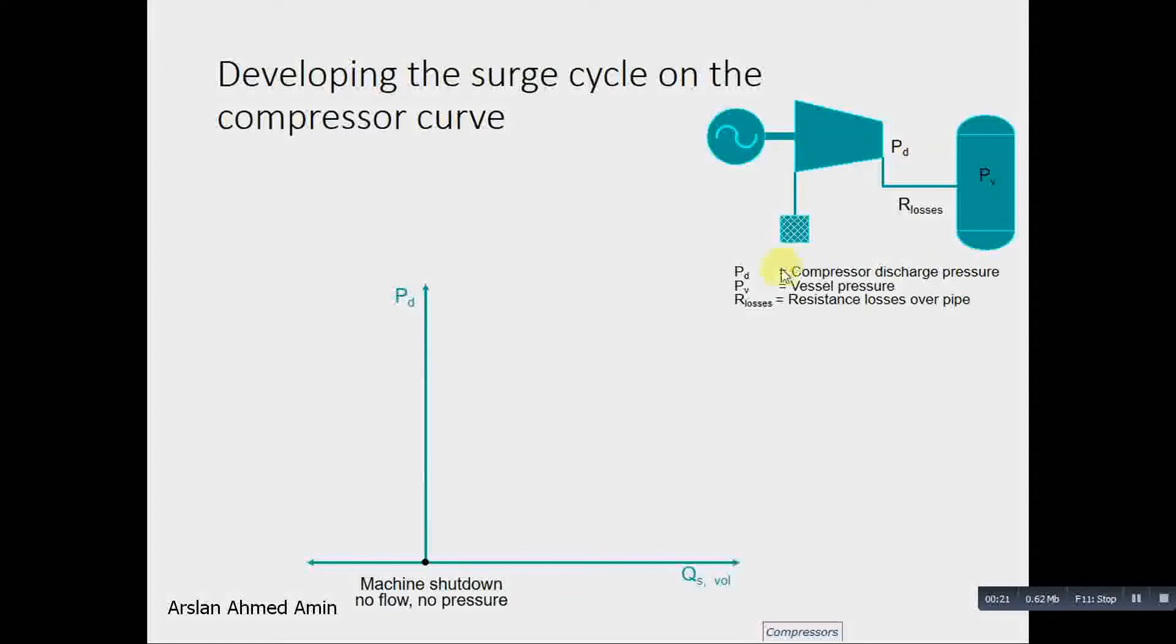Multiple compressor frames are installed here. This is the prime mover of the compressor. PD is the compressor discharge pressure, PV is the vessel pressure, and R is the resistance loss of the pipe.